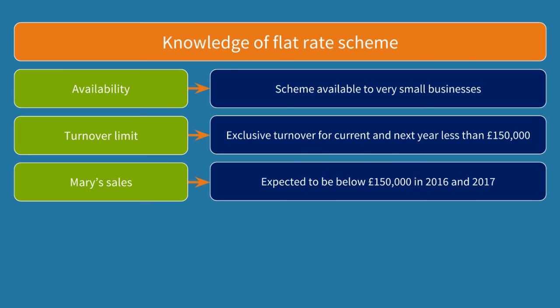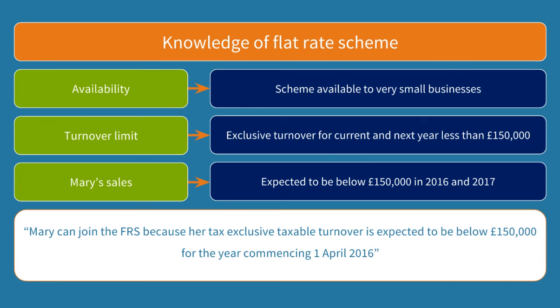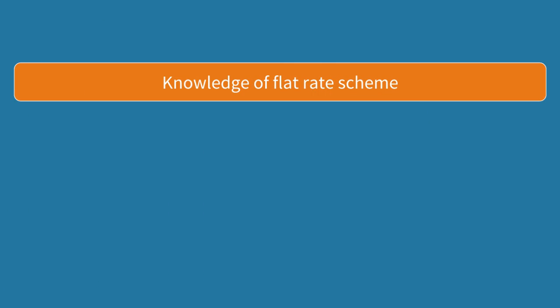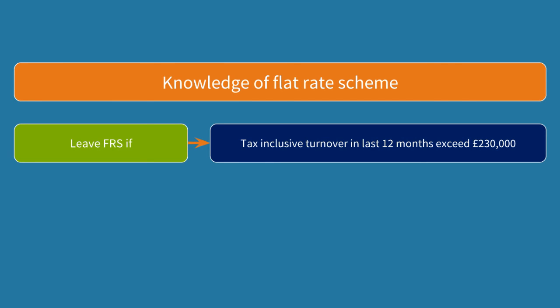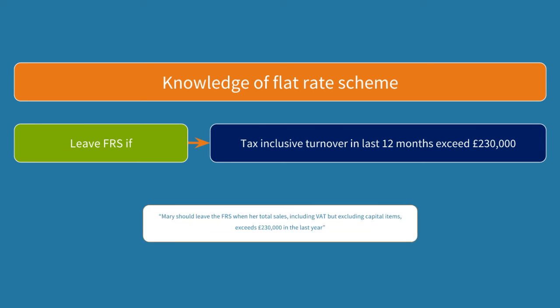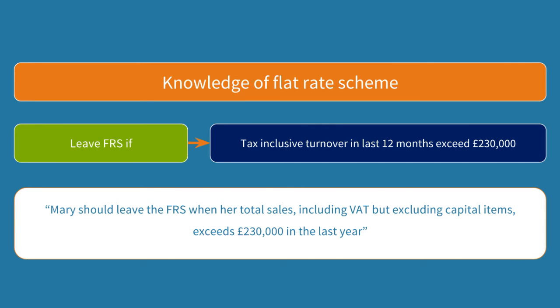Remember the clock is ticking, so: Mary can join the flat rate scheme because her tax-exclusive taxable turnover is expected to be below £150,000 for the year commencing 1st April 2016. That's one mark. For the second mark, this is pure knowledge. Taxpayers must leave the flat rate scheme if their tax-inclusive turnover, not including sales of capital assets, exceeds £230,000 in the last 12 months. So Mary should leave the flat rate scheme when her total sales including VAT but excluding capital items exceeds £230,000 in the last year.